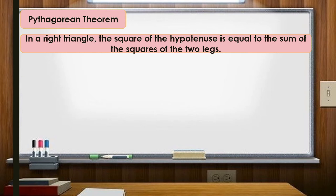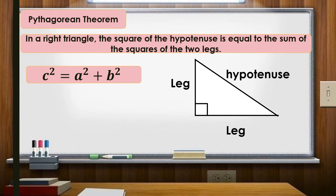The Pythagorean theorem states: in a right triangle, the square of the hypotenuse is equal to the sum of the squares of the two legs. So the original formula is c² = a² + b², where a and b are the two legs and c is the hypotenuse.